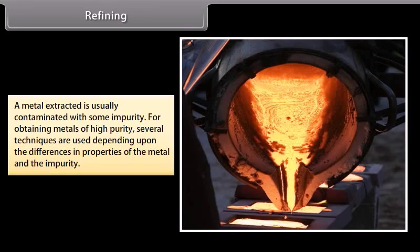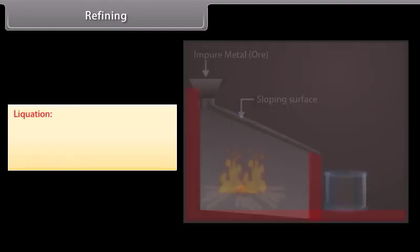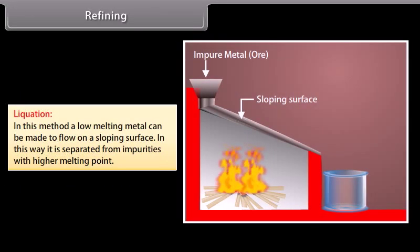Refining. A metal extracted is usually contaminated with some impurity. For obtaining metals of high purity, several techniques are used depending upon the differences in properties of the metal and the impurity. Distillation: It is the process used to purify those metals which have low boiling points. Impure metal is evaporated to obtain the pure metal as distillate. For example, zinc and mercury. Liquidation: In this method, a low melting metal can be made to flow on a sloping surface. In this way, it is separated from impurities with higher melting point. For example, tin.